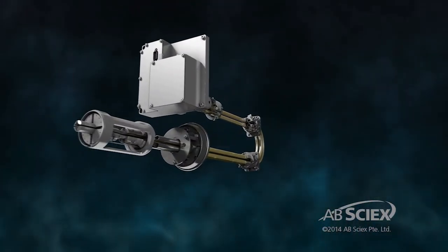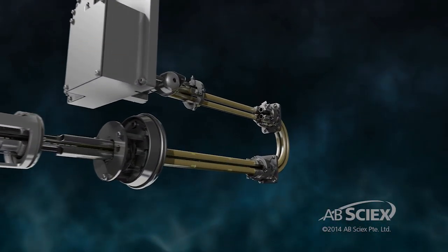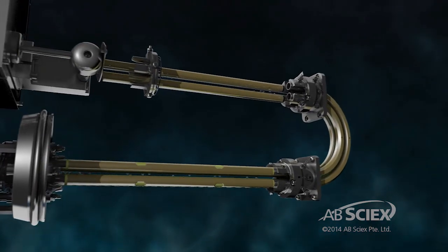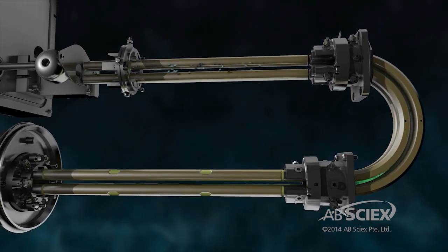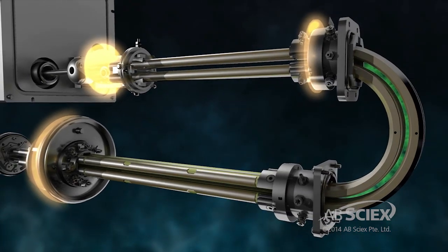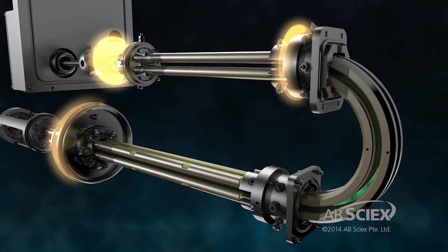The AB SCIEX Q-TRAP system is a hybrid triple quadrupole linear ion trap mass spectrometer. This system offers unique capabilities over and above the basic triple quadrupole instrument that helps solve a number of workflow challenges.